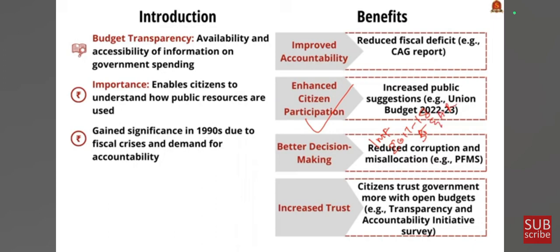Moving to the first part of the answer — benefits of budget transparency. First is improving accountability: transparency ensures governments are responsible for their financial decisions. For example, the Comptroller and Auditor General of India reported that the union government's fiscal deficit reduced by 1.4% of GDP between 2014 and 2019, indicating improved fiscal discipline. Secondly, enhanced citizen participation — informed citizens can engage in budgetary decisions and promote inclusive governance. The Union Budget 2022–23 received over 40,000 suggestions from citizens, a testament to growing public engagement.